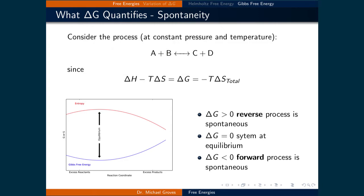The plot on the bottom left illustrates both entropy and Gibbs free energy as a function of reaction coordinate, and you can see that they are mirror images of each other. As one increases, the other decreases. This is from the negative sign in the relationship between them. So processes with positive entropy changes are spontaneous, which means that they must have negative changes in the Gibbs free energy to be spontaneous.